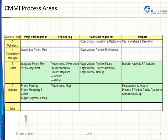The different CMMI Process Areas are represented in a tabular format with regard to project management, engineering, process management, and support. You will find the information in every cell very interesting.